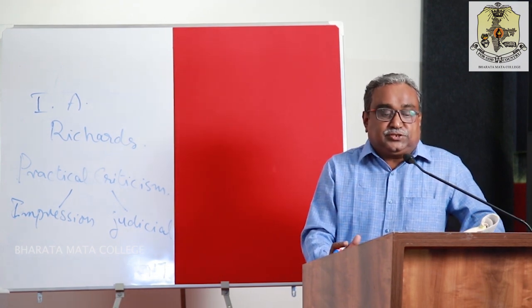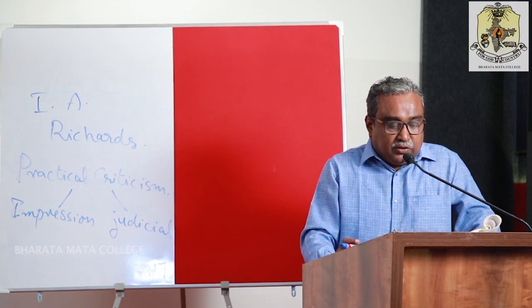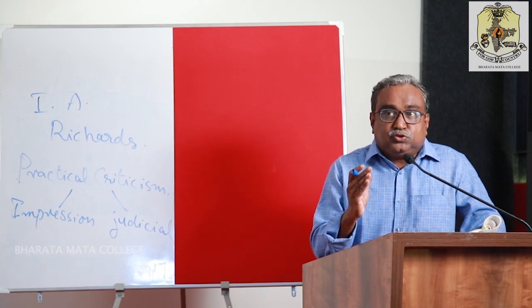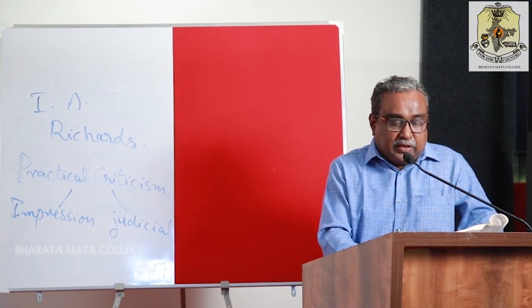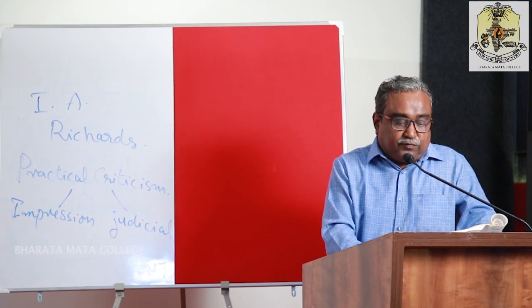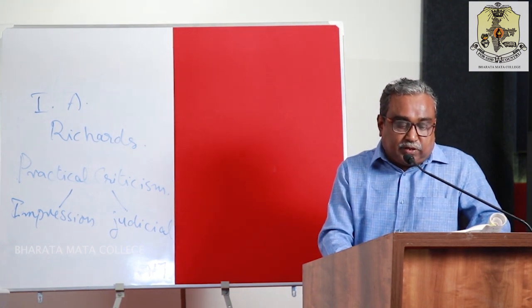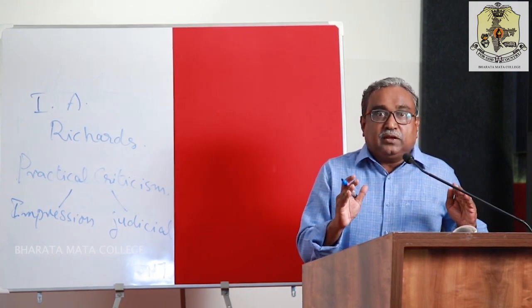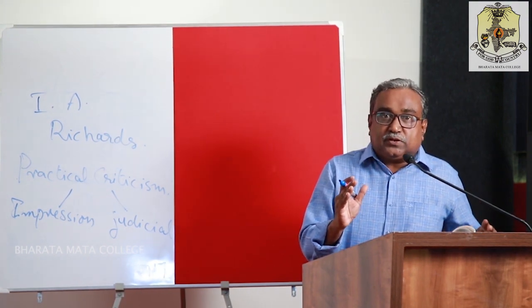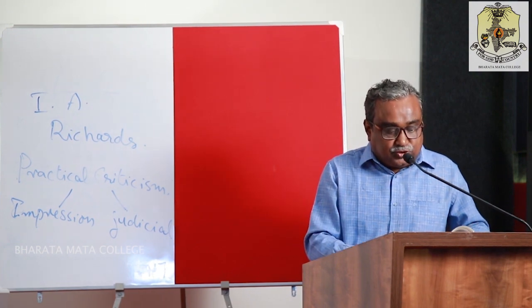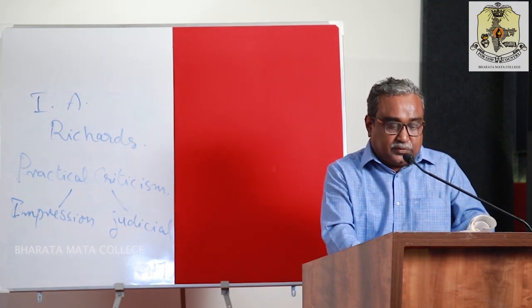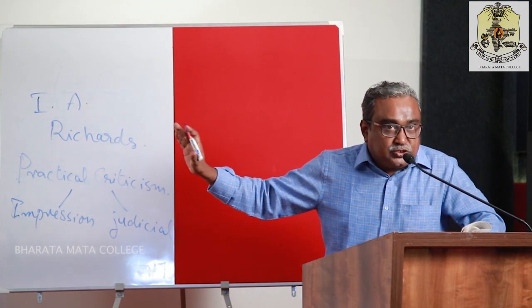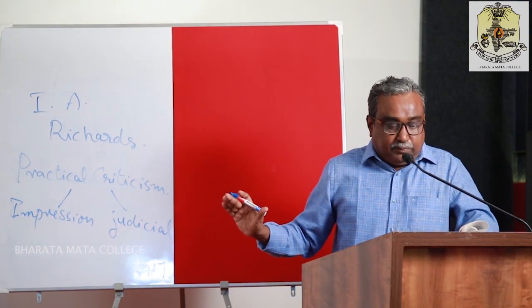The second one is judicial criticism. In judicial criticism, we critically analyze with our reason. There is a judicious point of view, and we analyze things with reference to individual judgment upon specified criteria of literary excellence. We arrive at literary excellence based upon specific evaluating terms — that is judicial criticism. These are the two kinds of practical criticism: based upon impression and upon reasoning power.